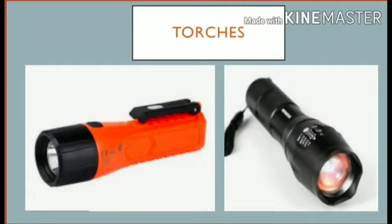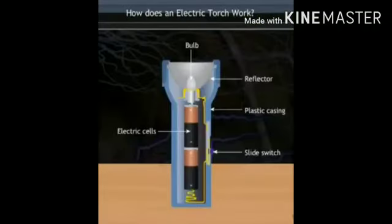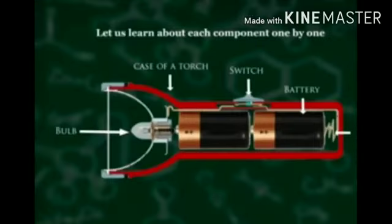How does an electric torch work? Students, carefully observe the inside view of a torch. An electric torch has two or more electric cells. Each electric cell has a positive and a negative terminal. They are connected in such a way that the positive terminal of one cell is connected to the negative terminal of the other.